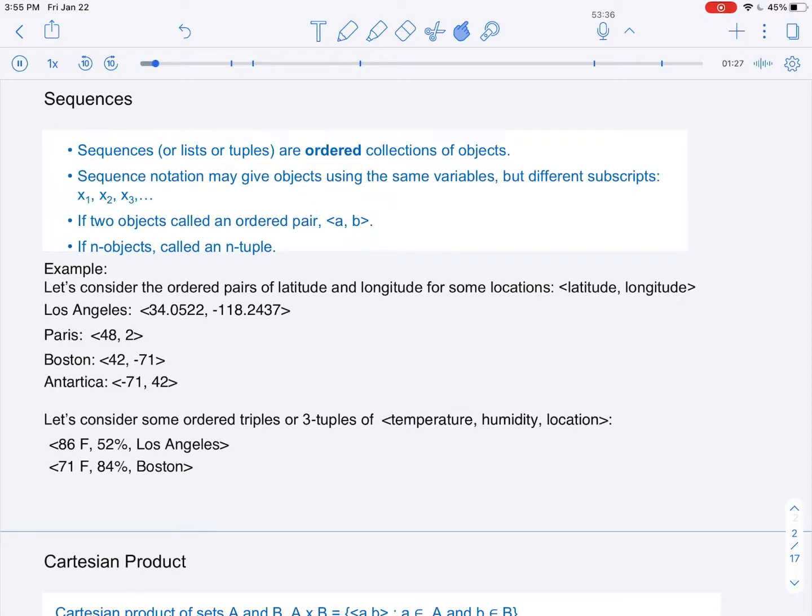the latitude being negative 71 and the longitude being 42, we end up in Antarctica. That might be a good trick to remember that in ordered pairs, the order indeed matters.